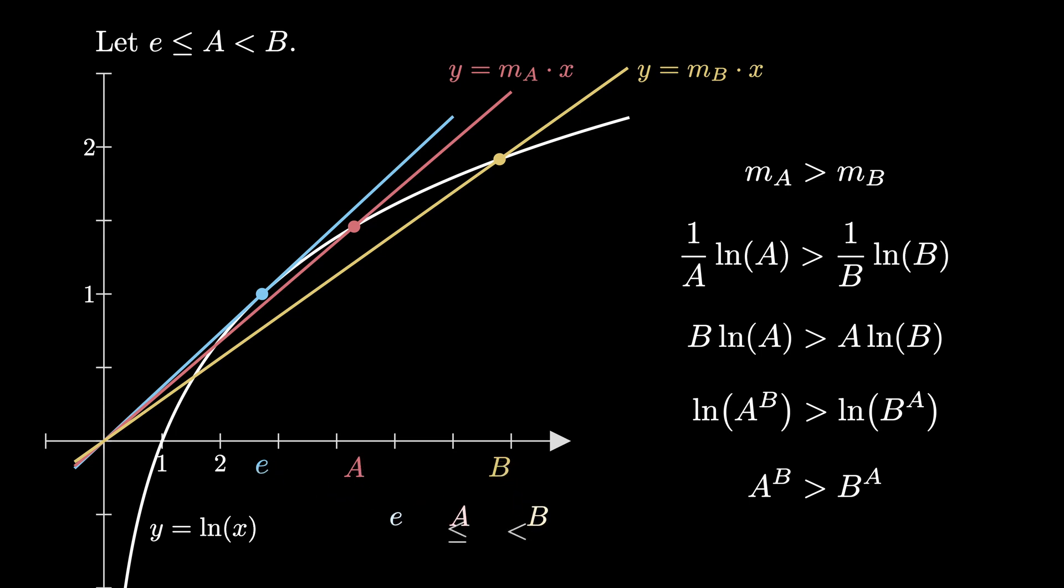Therefore, in this picture, we've seen that if e is less than or equal to a is less than b, then a to the b is greater than b to the a. Can you modify this visualization to figure out what happens when both a and b are less than or equal to e?